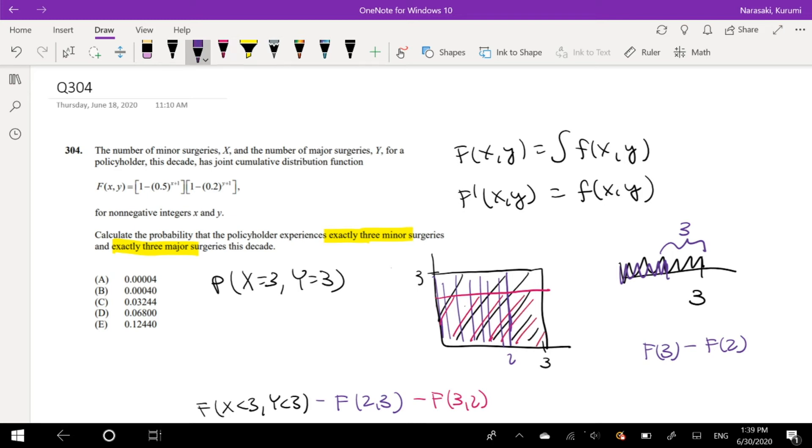But notice, this is something key that I didn't catch the first time, was that this area in the middle, the CDF of (2,2), when x is equal to 2 and y is equal to 2, this area right here is counted twice. So we have to actually add one of them back so we don't double count it.